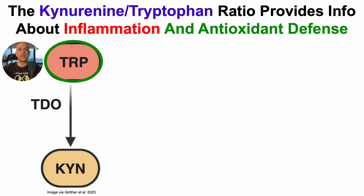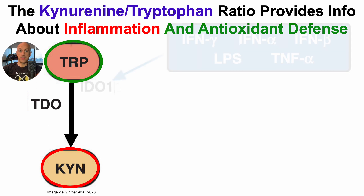Starting with the amino acid tryptophan, which is degraded into kynurenine by the enzyme TDO — a process that generally happens in the liver, for example after we eat a meal. Tryptophan is degraded into kynurenine, and then kynurenine is further degraded with the goal of making NAD through the de novo NAD synthesis pathway.